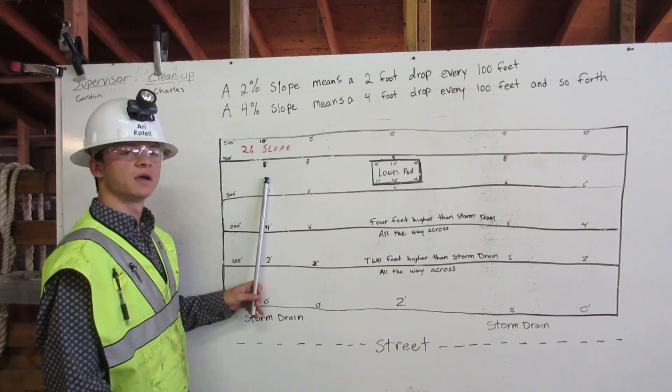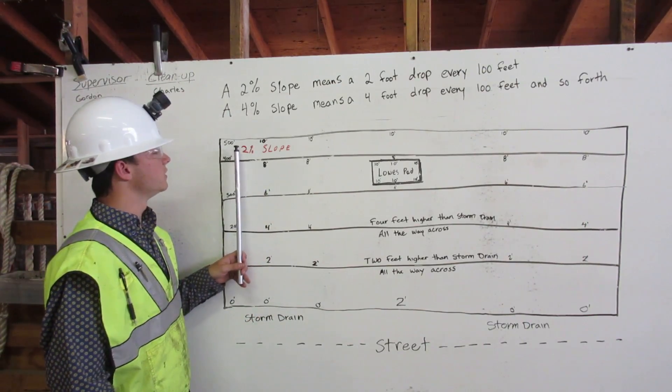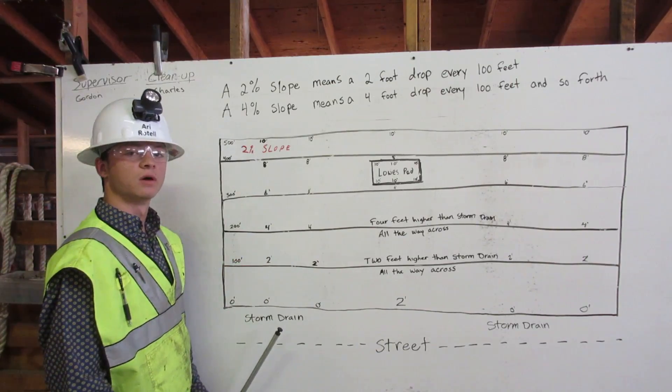At 400 feet, it will be 8 feet higher. At 500 feet, it will be 10 feet higher than the storm drain all the way across.